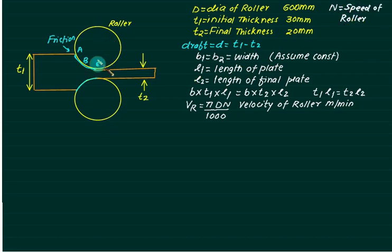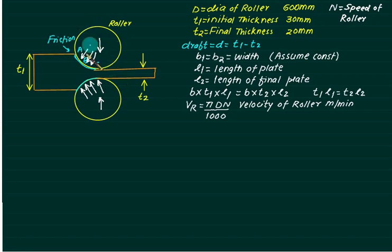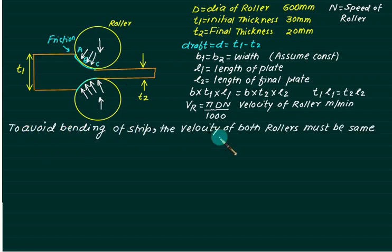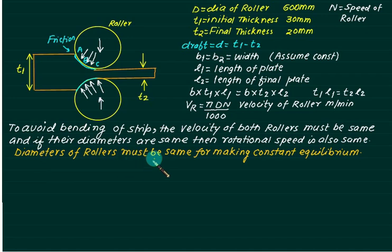Both rollers are made identical because the forces acting at each contact point can be resolved into horizontal and vertical components. The net force acts downward from the top roller and upward from the bottom. For equilibrium, the size of the two rollers must be the same. If they are not equal, one force dominates and the plate bends — either downward or upward. So to avoid bending, the diameter of both rollers must be identical, ensuring the net downward force cancels the net upward force.